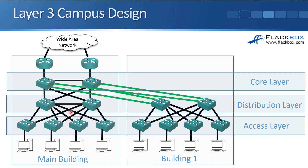It would be better if we could have layer 3 links everywhere and not use spanning tree anymore. You may be wondering: why didn't we always do that? Why did we used to have layer 2 links between the access layer and the distribution layer? In a lot of modern networks we still do have layer 2 links from the access to the distribution layer.